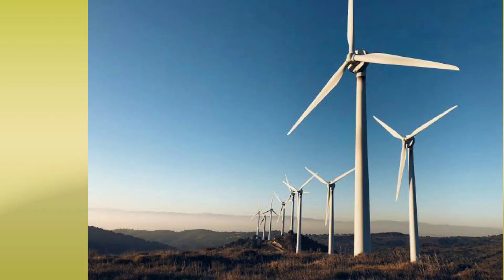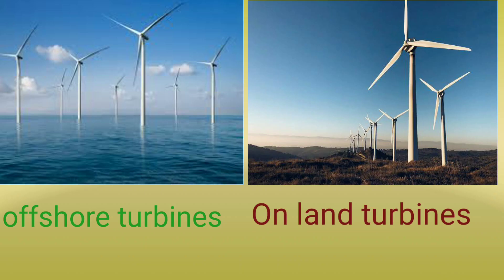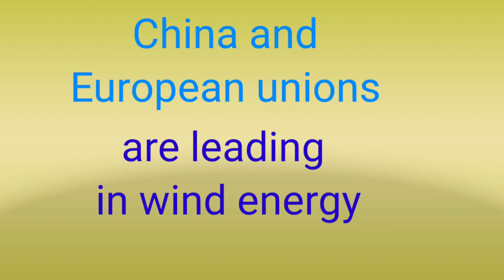Now moving to the second form of renewable energy: wind energy. Wind energy describes the process that uses wind to provide mechanical power to turbines connected to electrical generators for generation of electrical power. Wind turbines are located in two places: one, on land; and two, offshore. Offshore turbines have great potential for increased electrical generation because wind blows harder and more uniformly offshore than on land.